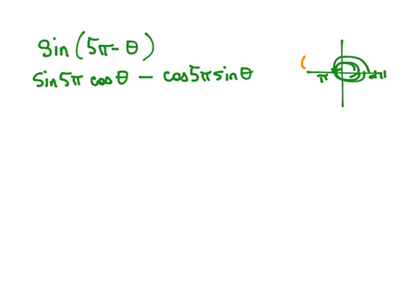And the ordered pair at that place on our unit circle is negative 1, 0. So the sine of 5π is going to be the y-coordinate on that unit circle, which would be 0.